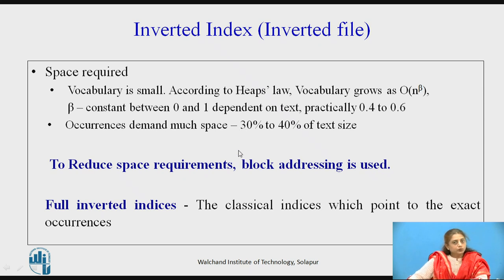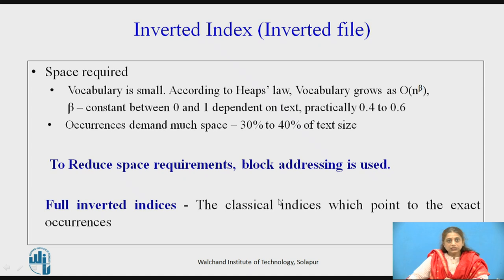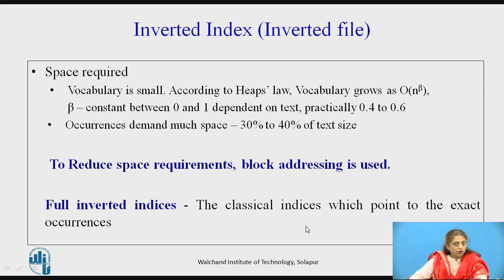The space required for vocabulary is small compared to the text because we are identifying only the index terms. According to Heaps' law, vocabulary grows as O(n^beta), where beta is a value between 0 and 1, practically between 0.4 and 0.6. Occurrences demand much more space than vocabulary, around 30 to 40 percent of the text. To reduce this space requirement we can use block addressing. When storing indices with exact positions it is called a full inverted index.